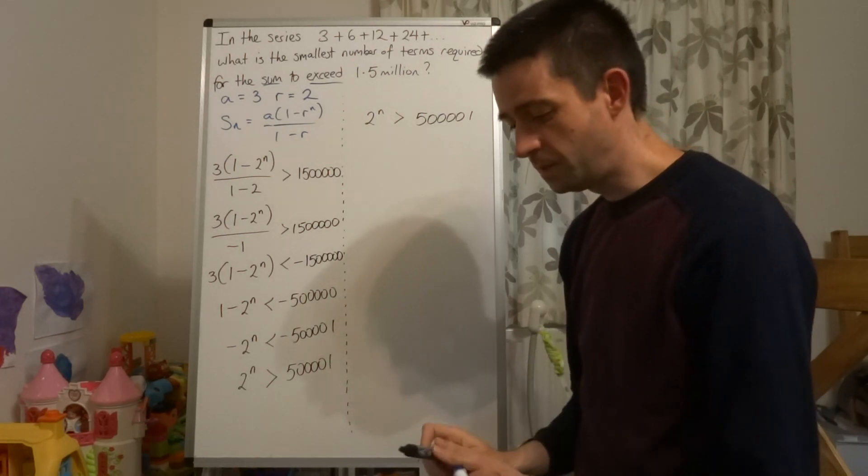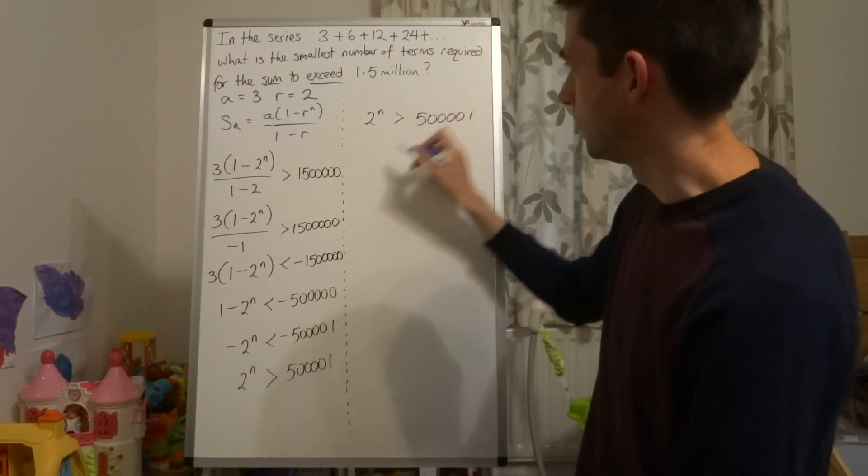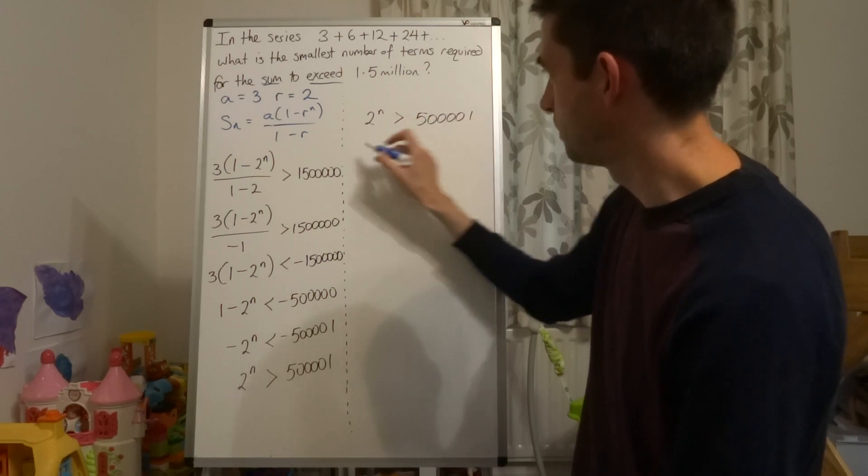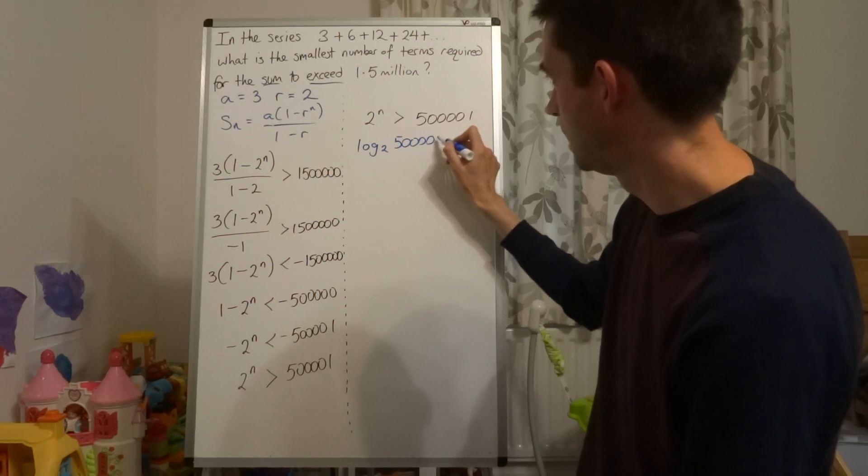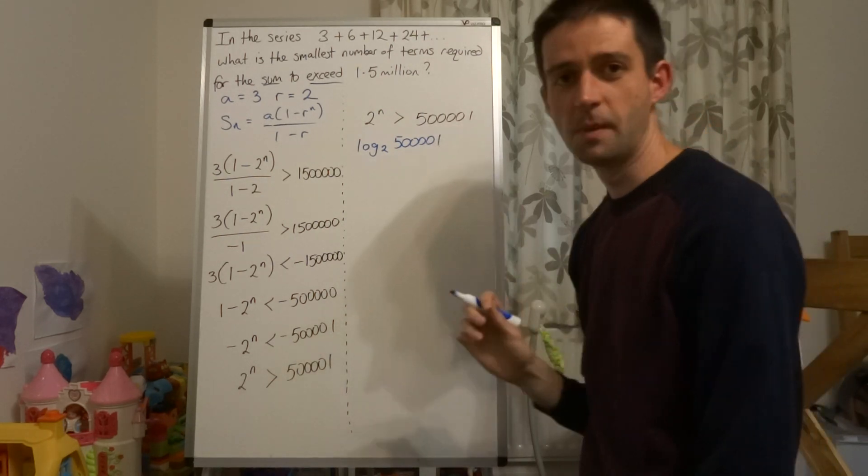Now, you might be tempted to say, oh, yeah, I see this, Mr Sutton. It's base power. So it's log base 2 of 500,001. And that's going to give me my answer.